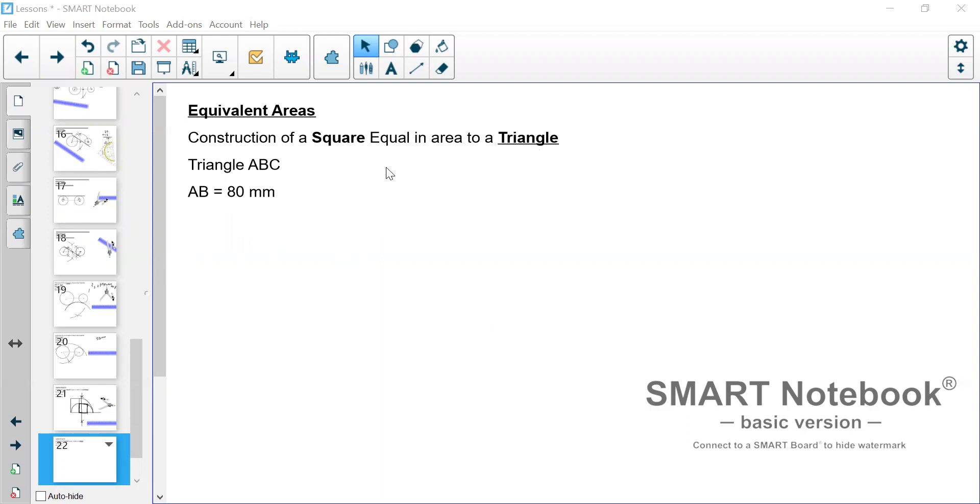A square equal in area to a triangle. So we will start first by constructing the triangle, and then we'll convert that triangle to a square. Or in other words, we will obtain a square that is equal in area to that triangle.